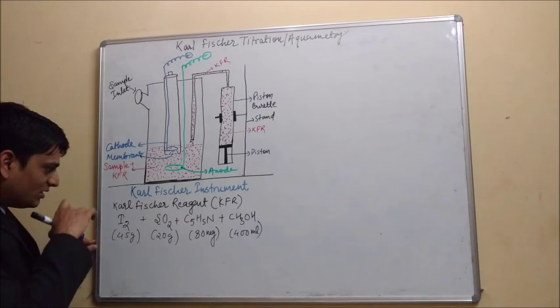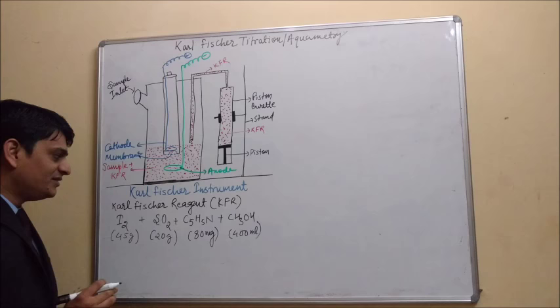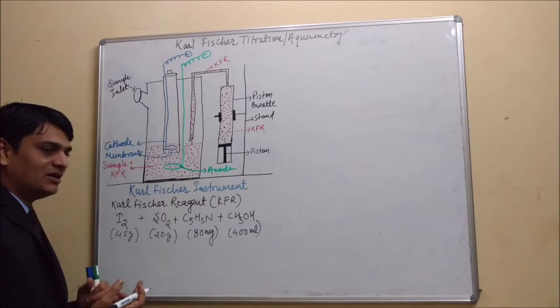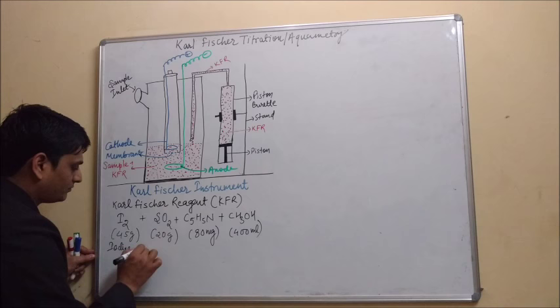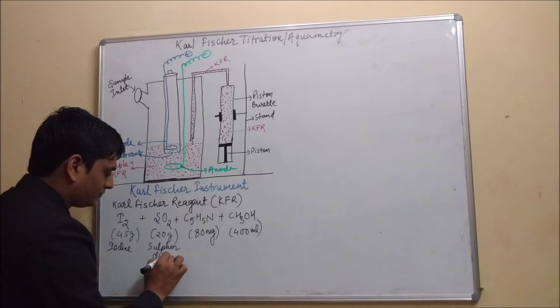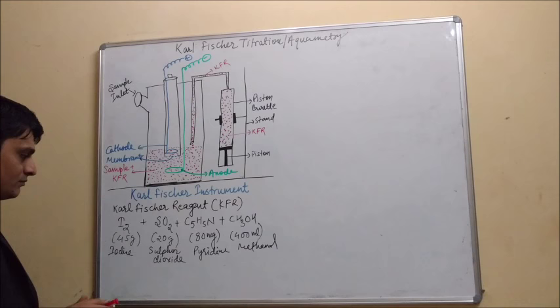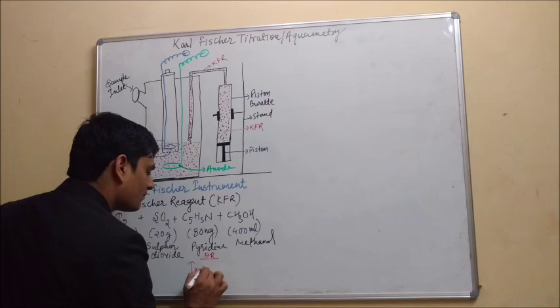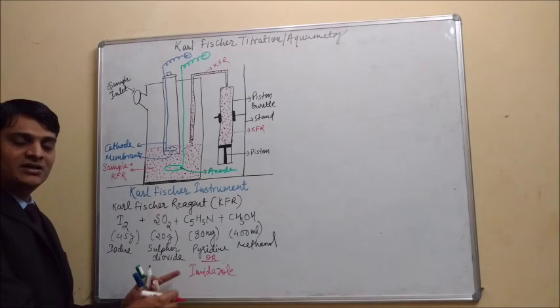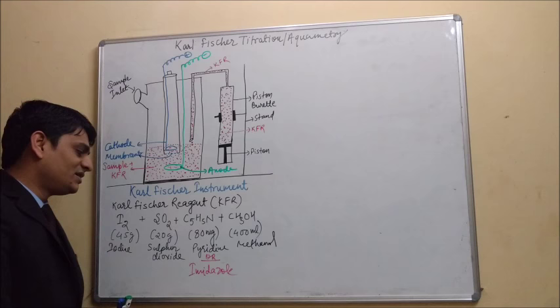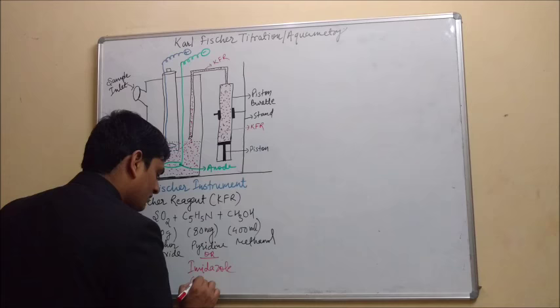Nowadays, in the place of pyridine, imidazole is used because pyridine is carcinogenic in nature. So imidazole can be used in the place of pyridine. The formula for imidazole is C₃H₄N₂.